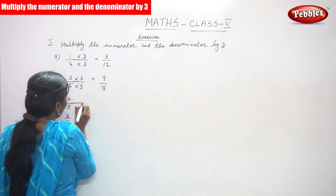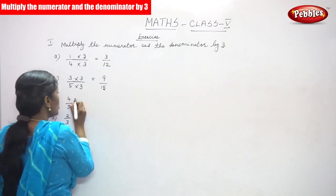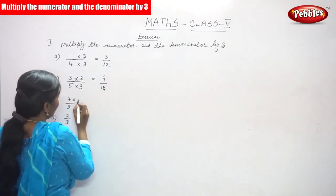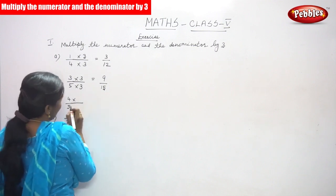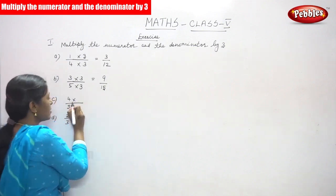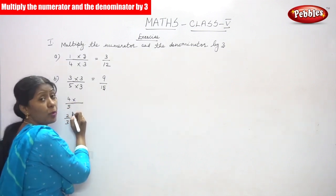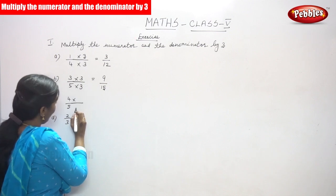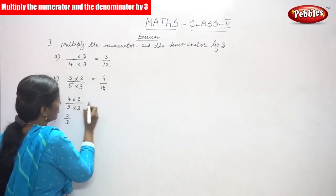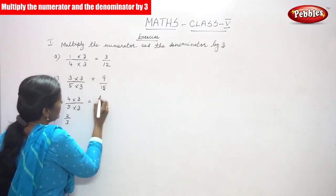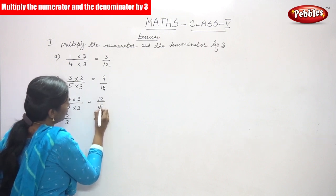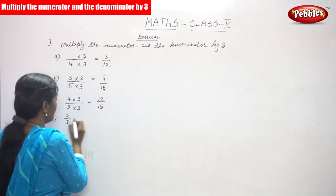Next, that is 4 by 5. You have to multiply the same — multiply by 3. 4 by 5 is a fraction, so the numerator is 4 and denominator is 5. So, 4 into 3 and 5 into 3. The answer is 4 into 3 is 12, and 5 into 3, you can get 15.